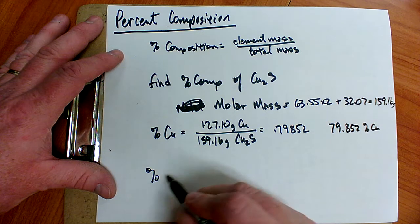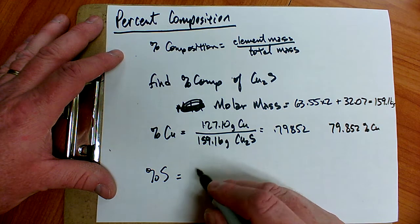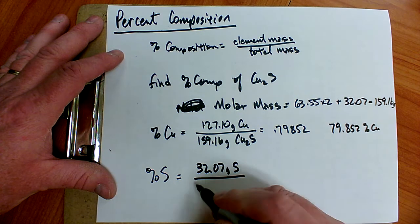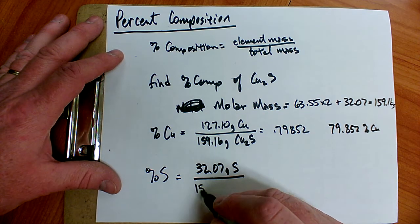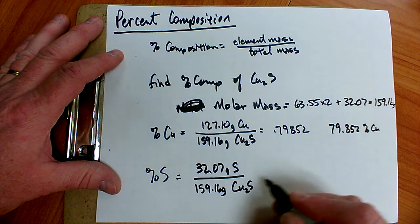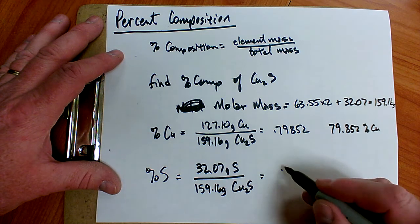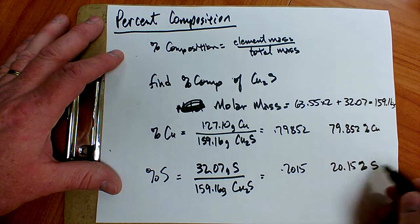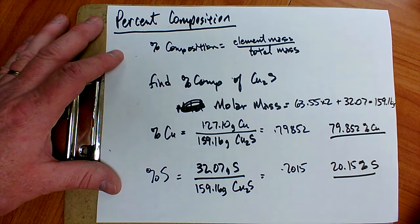To find the percent sulfur, I simply take the sulfur mass, the mass of the element sulfur, 32.07 grams of sulfur, divided by the total mass of the compound, 159.16 grams copper-1-sulfide. And I get a decimal 0.2015. So that is 20.15 percent sulfur. That is the percent composition.